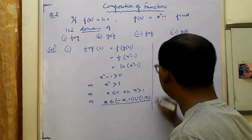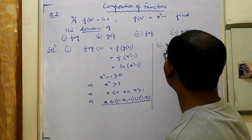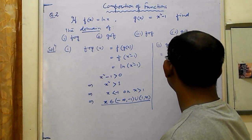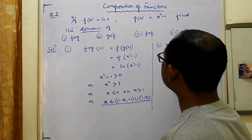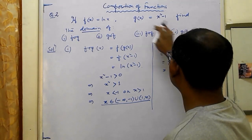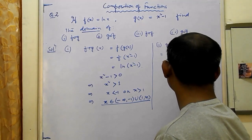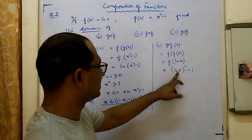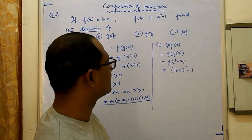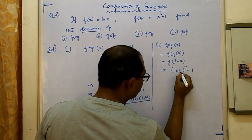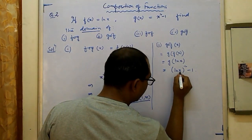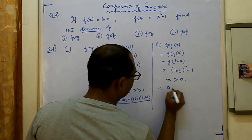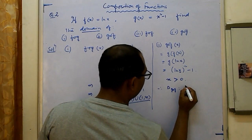For g of f(x): f(x) = ln x, so g of f(x) = (ln x)² − 1. For this to be defined, ln x must be defined, so x must be greater than 0. Therefore the domain of g∘f is (0, ∞).